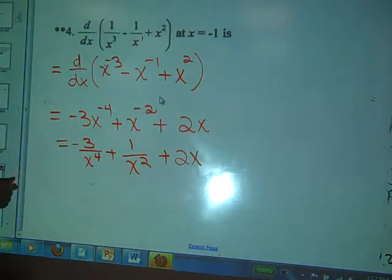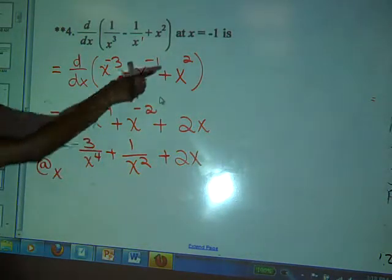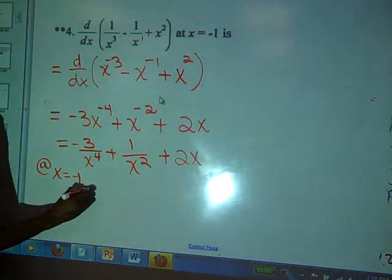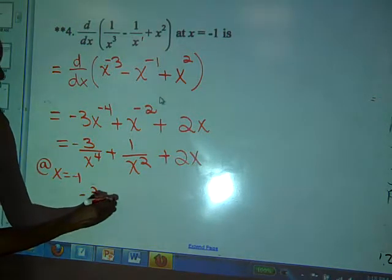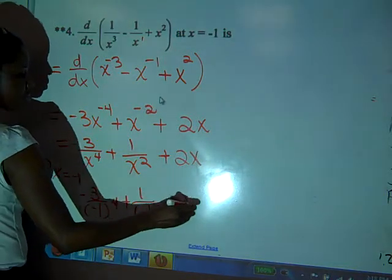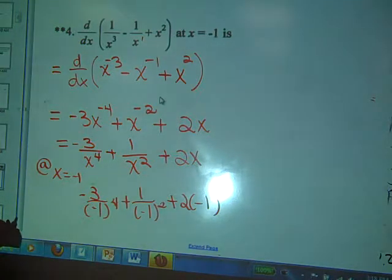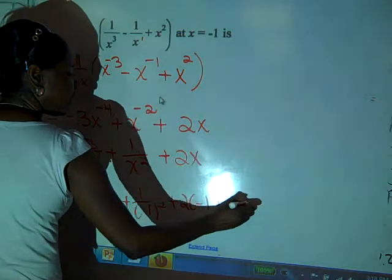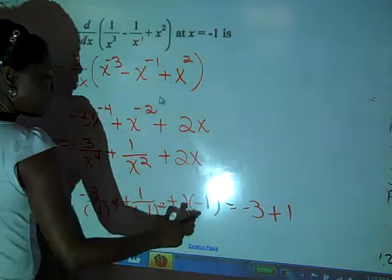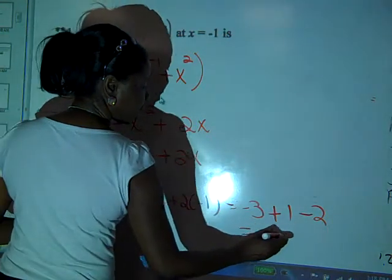That is the derivative, but we still have to evaluate the derivative where? At the bottom. Where did they tell me? They want the slope generated at X equals negative 1. So at that point, we're just going to plug in negative 1. Let's see what we get. What's negative 1 to the 4th power? 1. So that means I'm just going to be left with a negative 3 there. Negative 1 squared is 1. So 1 over 1 is plus 1. Minus 2. What is that going to give me? Negative 4. Negative 4 is absolutely correct.